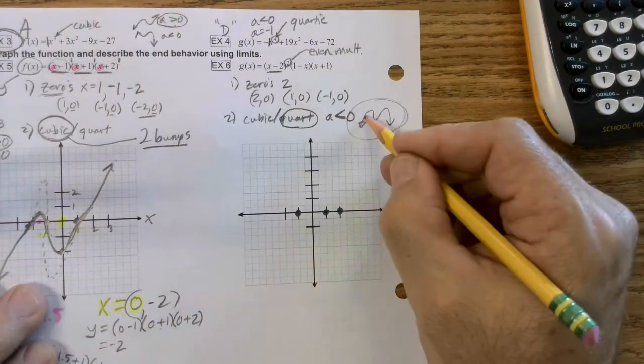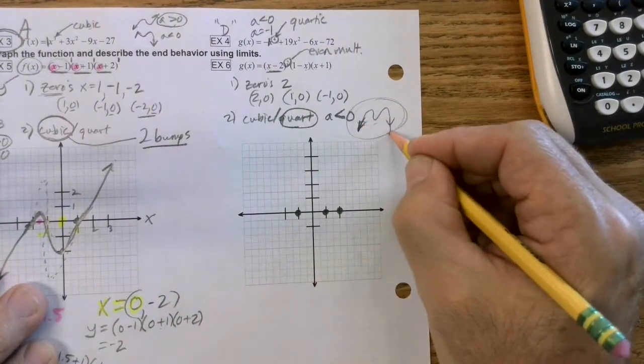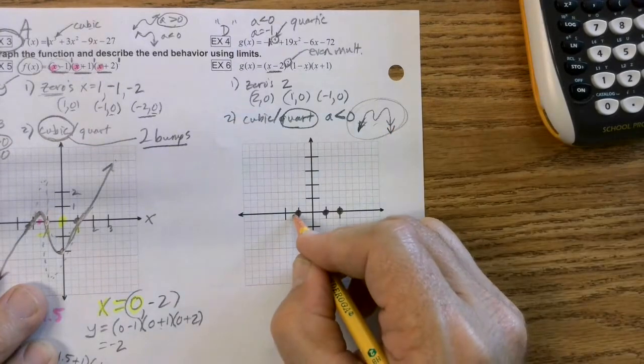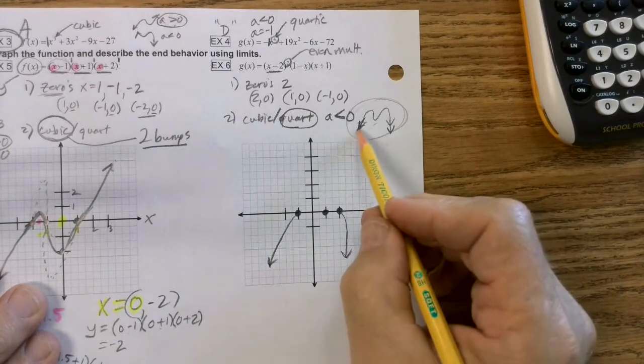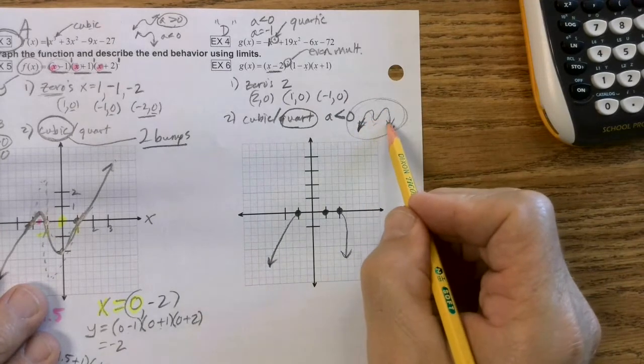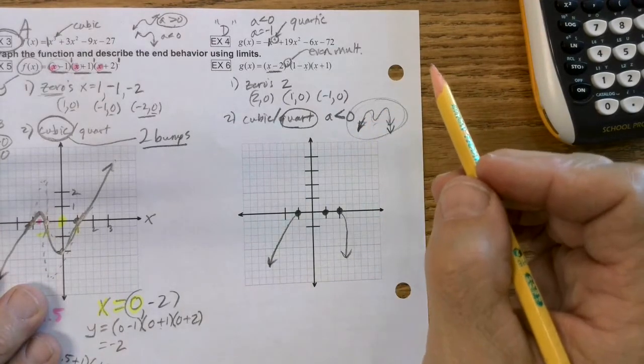So I do know that on the outside edges, they're going to both go down. So I know here it's going to go down. Here it's going to go down. Now the question is, how do I make my letter M? Here come the clues. Are you ready?